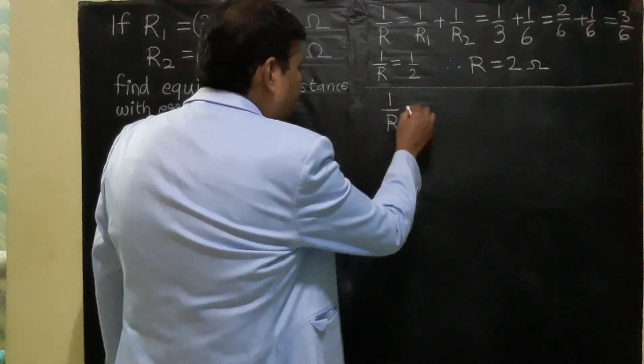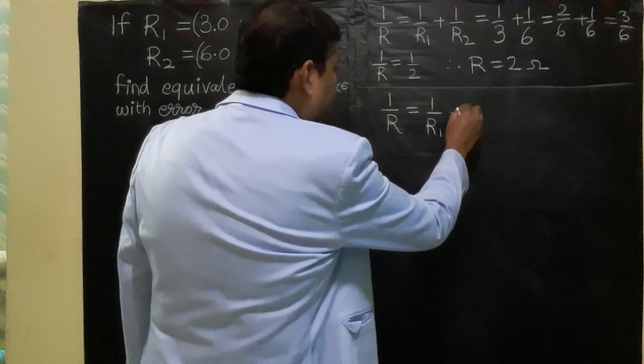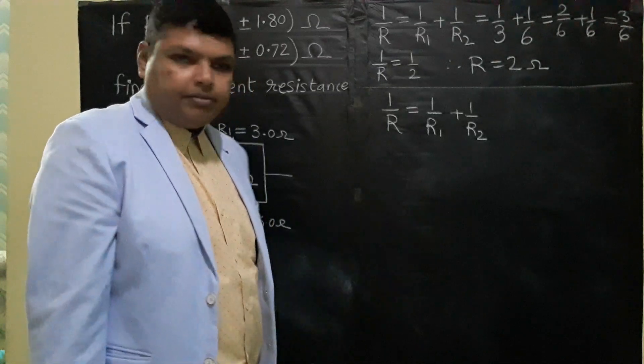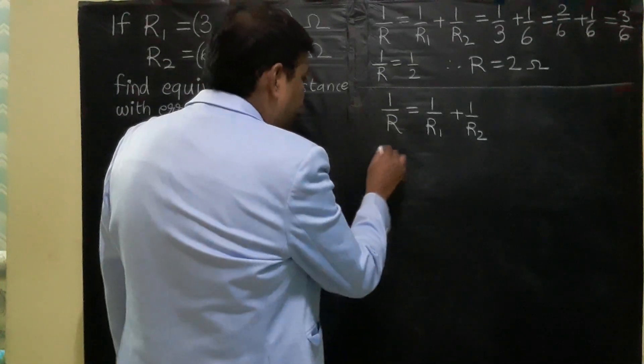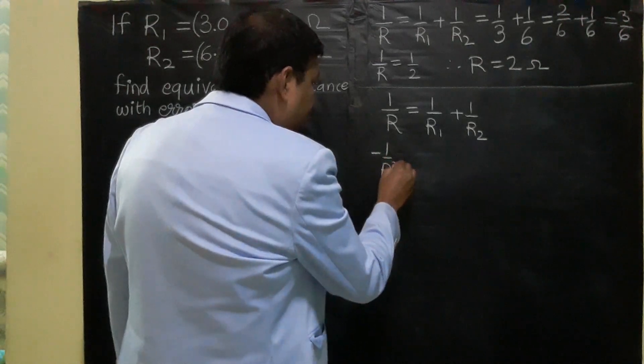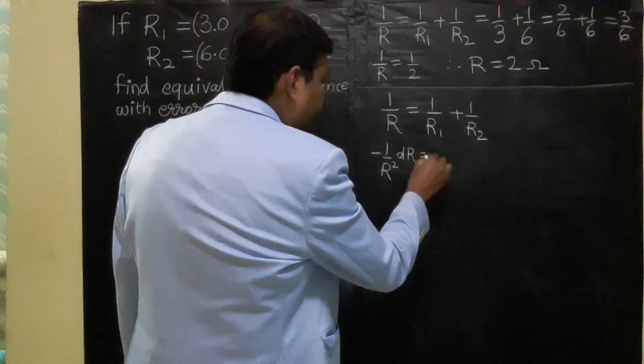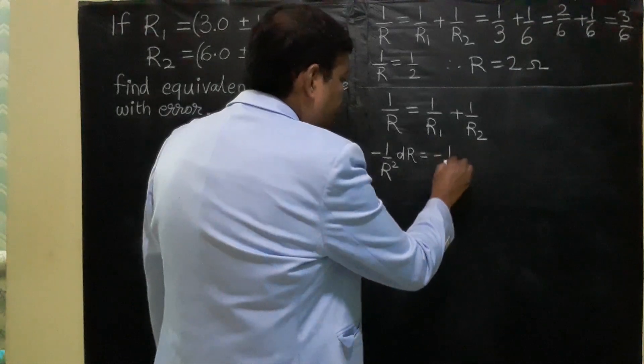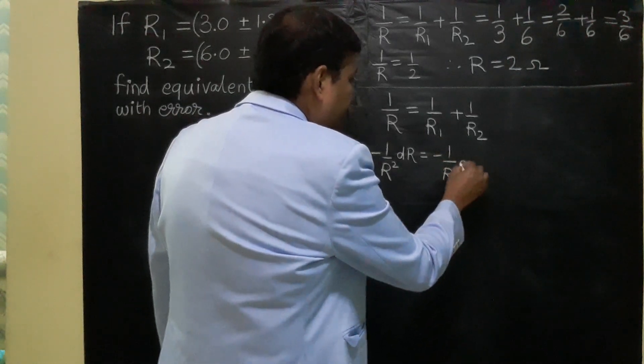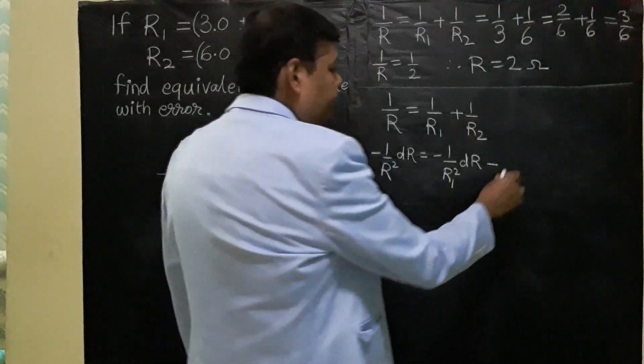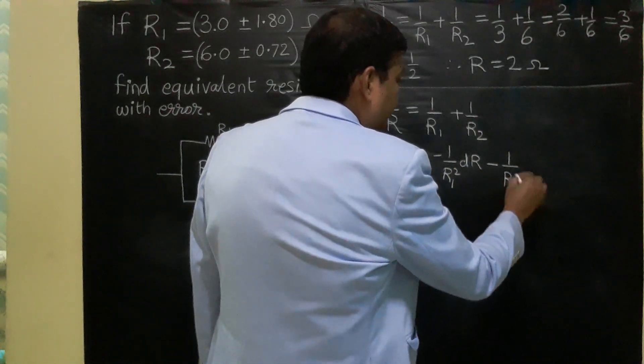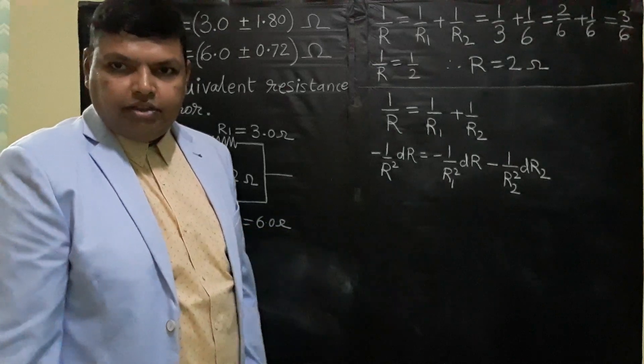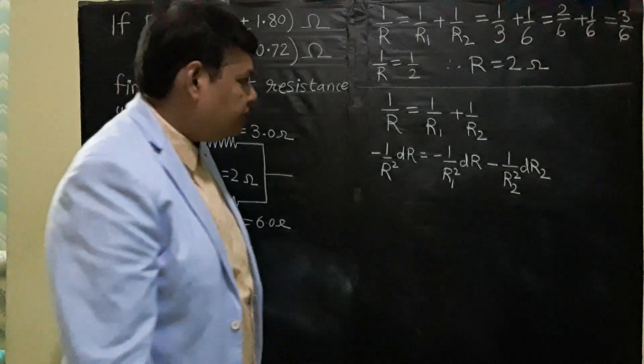First of all write down the formula: 1/R = 1/R1 + 1/R2. Then differentiate this equation. Differentiation of 1/R will be -1/R² × dR. Similarly differentiation of 1/R1 will be -1/R1² × dR1 plus -1/R2² × dR2. Now this looks a little different. Let us understand how we could get this differentiation result.